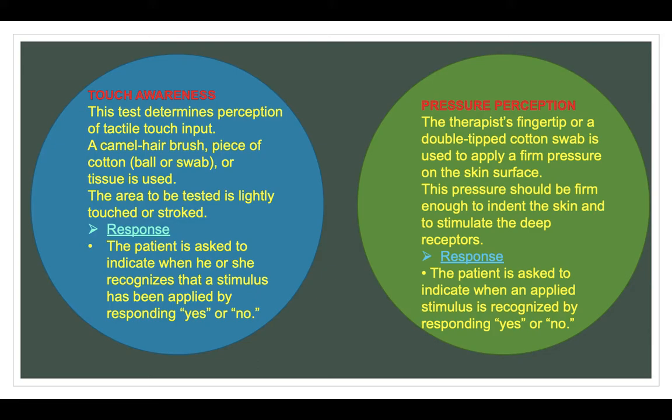Pressure perception: the therapist's fingertip or a double-tip cotton swab is used to apply firm pressure on the skin surface. This pressure should be firm enough to indent the skin and stimulate the deep receptors. Response: the patient is asked to indicate when an applied stimulus is recognized by responding 'yes' or 'no.'